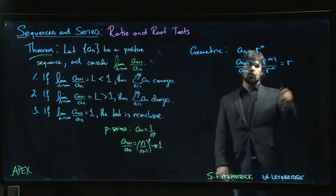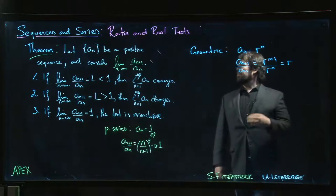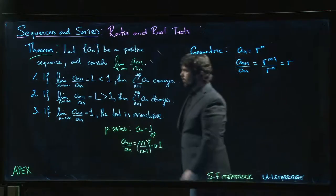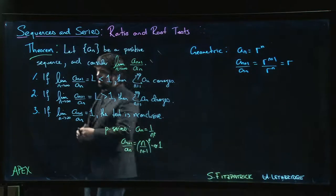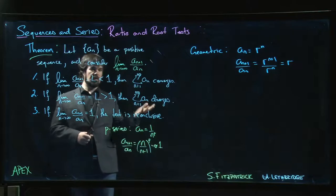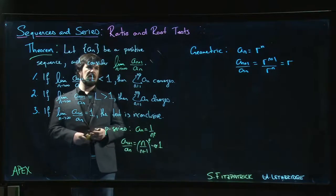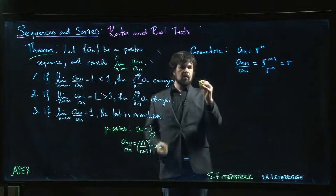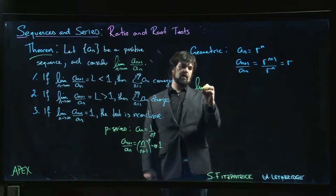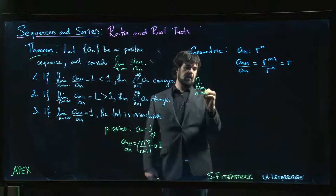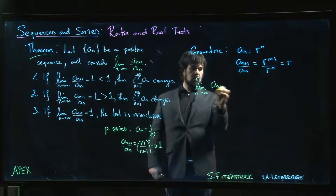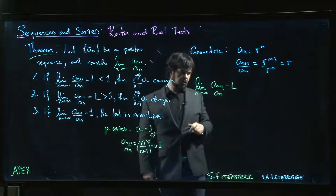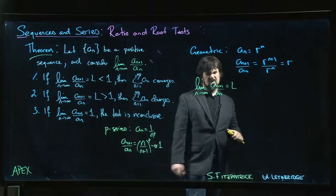And as we already know, geometric series converges precisely for positive r when r is less than one. We can see that again with the ratio test. In fact, the way you actually understand why the ratio test works, the way you would prove it, is using something based on the geometric series test. It's realizing: what are we really saying when we say that the limit as n goes to infinity of a_n+1 over a_n is equal to L?